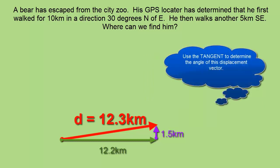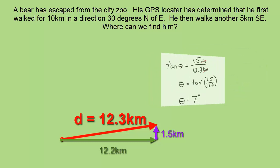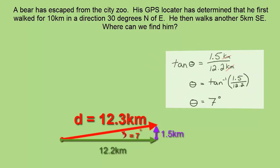Finally we need to determine what direction it's acting in. And all we have to use is simple SOHCAHTOA, since we have a right triangle, to get an angle using the tangent of 7 degrees north of east.